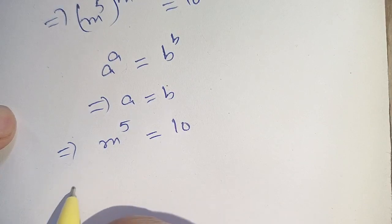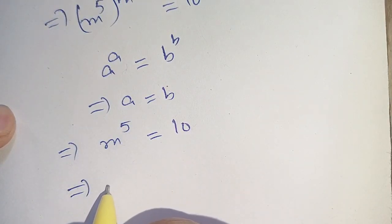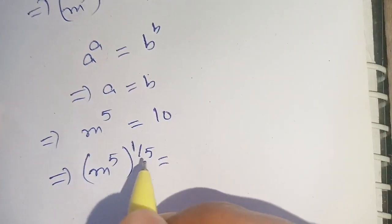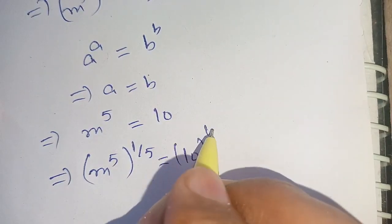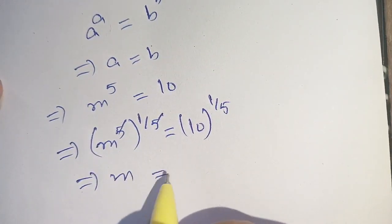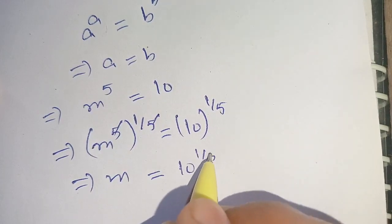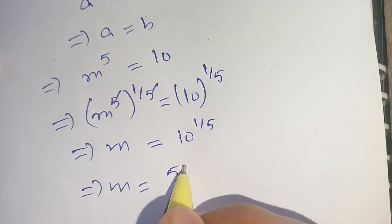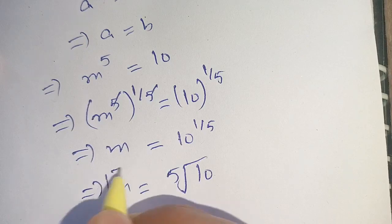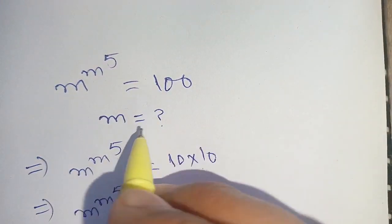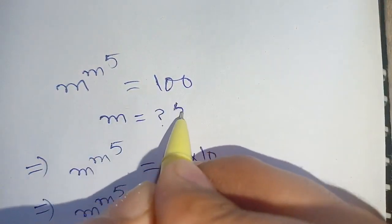Now on taking the power 1 divided by 5 on both sides, we can write this as m raised to the power 5, bracket power 1 divided by 5, is equal to 10 raised to the power 1 divided by 5. We can cancel out the 5 by 5, and the remaining result is m is equal to 10 raised to the power 1 divided by 5, or we can write this as m is equal to the 5th root of 10. This is the required value of m which satisfies our equation: m raised to the power m raised to the power 5 is equal to 100, implies m is equal to the 5th root of 10.